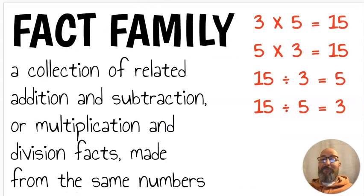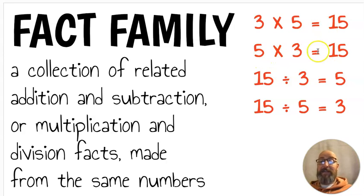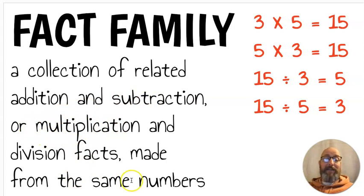Next we have fact family. A fact family is a collection of related addition and subtraction, or multiplication and division facts made from the same numbers. Here's an example with multiplication and division: three times five is fifteen, five times three is fifteen — just rearrange the factors — fifteen divided by three equals five, fifteen divided by five equals three. That is a fact family, all four of those together.